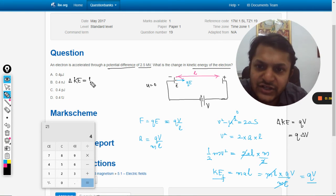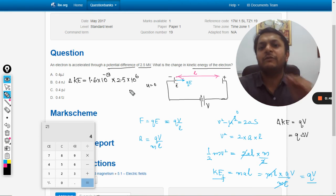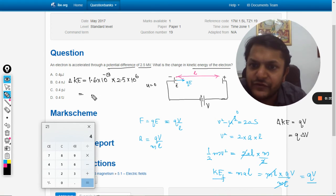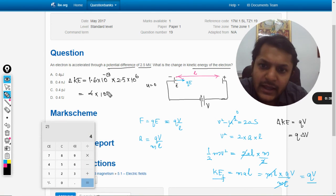As I have told you earlier, we can directly apply the formula to get the answer. We have done that. So now this is coming out to be 1.6 multiplied by 2.5 is 4 into 10 raised to power minus 13.